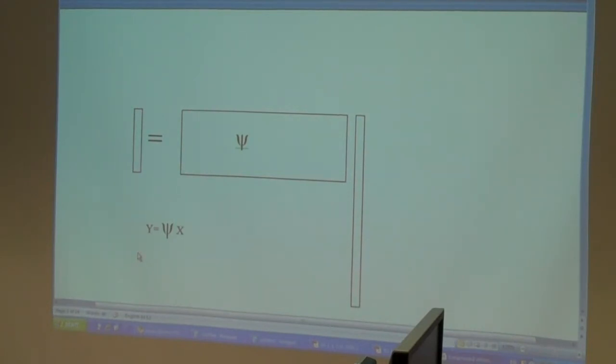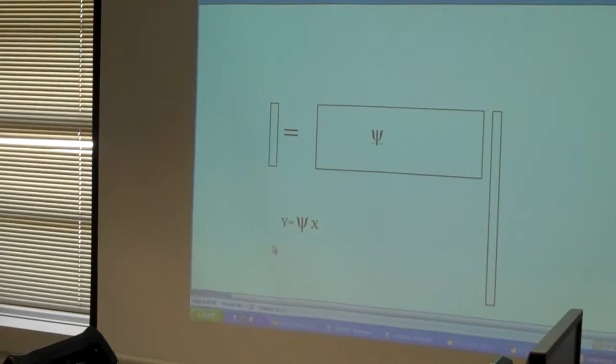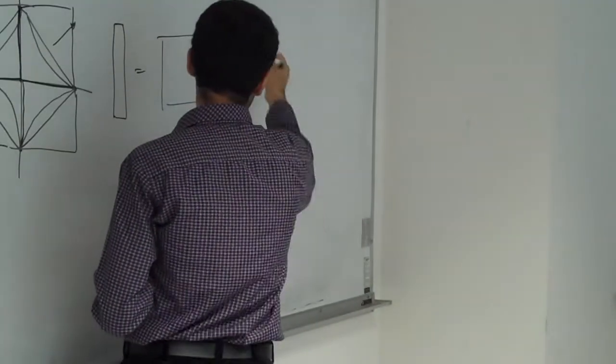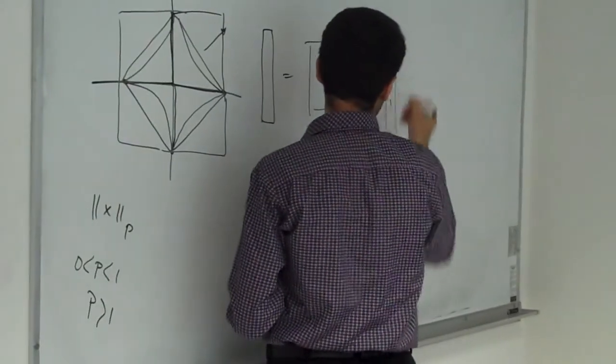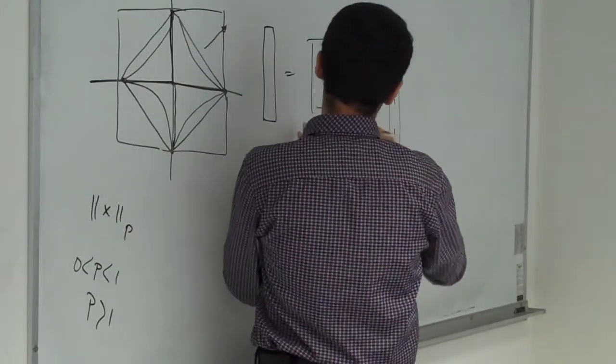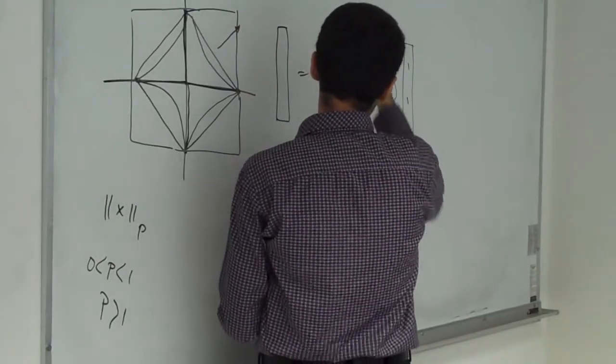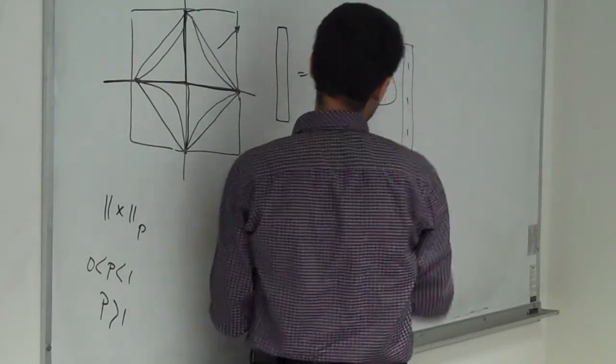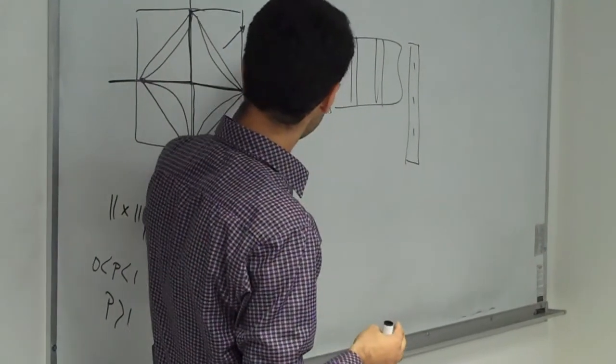In compressive sensing, we observe y and try to find an x that is sparse that we can work with. If we have y and the matrix psi or something, if we have some bound here and after the multiplication, it means some rows in this matrix are important for us to reconstruct the body.